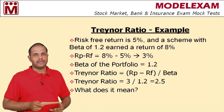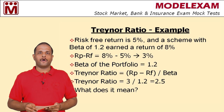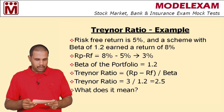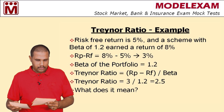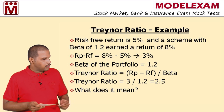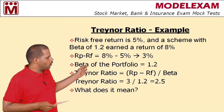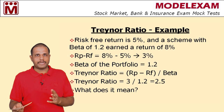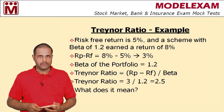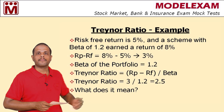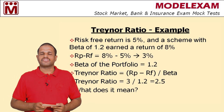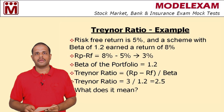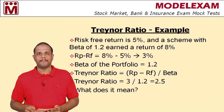A few more comparison points about Sharpe and Treynor ratio: both are comparative measures. Sharpe ratio uses standard deviation, whereas Treynor ratio uses beta.